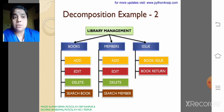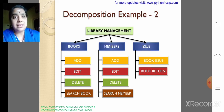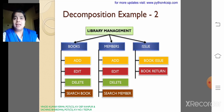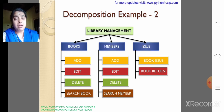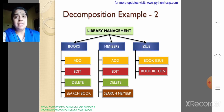The last module is issue — issue book and return book: when it is issued and when it is returned. Subtasks like addition and deletion also happen here. This is the simplest example for decomposition. Consider a large program like a library management system software — it is subdivided into three main parts: books, members, and issue.